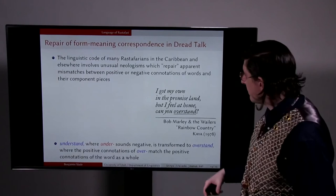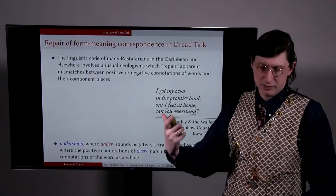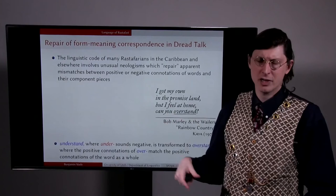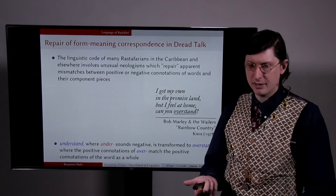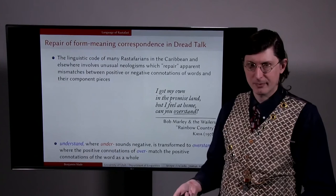For example, in Bob Marley's songs, we have the lyrics: 'I got my own in the promised land but I feel at home, can you overstand?' Overstand, signifying understand, has been transformed because understand has positive connotations—understanding is a good thing—but the component piece 'under' sounds negative. To essentially repair this perceived mismatch, the 'under' is transformed to 'over.' So we get overstand where the connotations of the pieces and the word match.